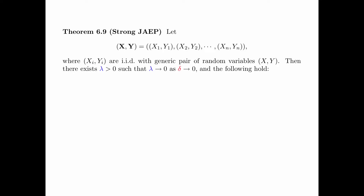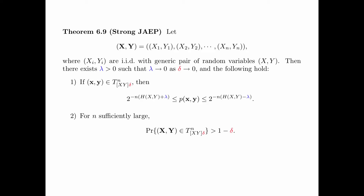Theorem 6.9 is the strong joint AEP. Consider a pair of random sequences x, y whose components are (x_1, y_1), (x_2, y_2), ..., (x_n, y_n), where (x_i, y_i) are IID with generic pair (X, Y). Then there exists λ > 0 such that λ tends to 0 as δ tends to 0. First, if a pair of sequences x and y are jointly delta-typical, then the joint probability is lower bounded by 2^{−n(H(X,Y)+λ)} and upper bounded by 2^{−n(H(X,Y)−λ)}. Second, for n sufficiently large, the probability that the pair of random sequences x and y is jointly delta-typical is greater than 1 − δ.